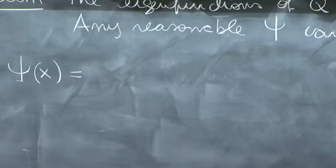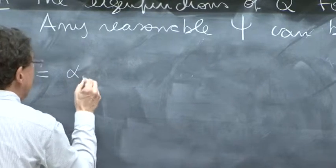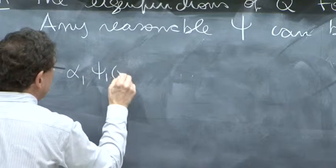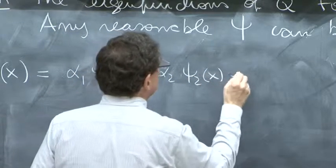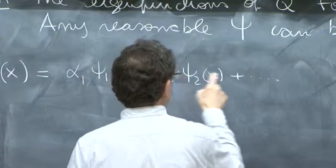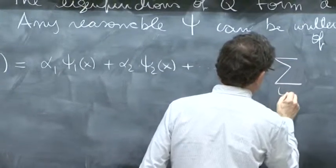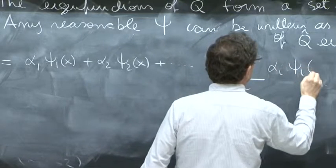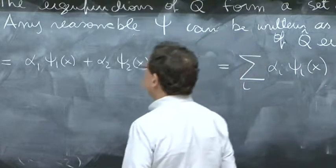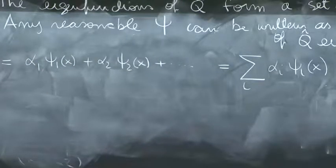Can be written as a superposition of all these eigenfunctions. So there are numbers alpha 1, psi 1 of x plus alpha 2, psi 2 of x. Those are the expansion coefficients, the alphas. And in summary, you say sum over i, alpha i psi i of x. So the idea is that those alpha i's exist, and you can write them.